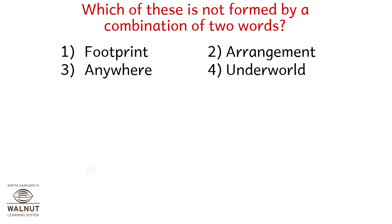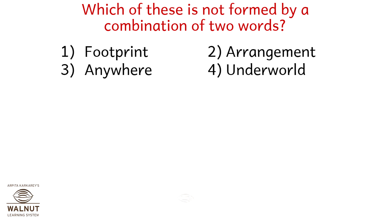Which of these is not formed by a combination of two words? Footprint, arrangement, anywhere, underworld. Footprint is foot and print. Anywhere is any and where. Underworld is under and world. Arrangement is not a combination of two words. So the correct answer is option 2: Arrangement.